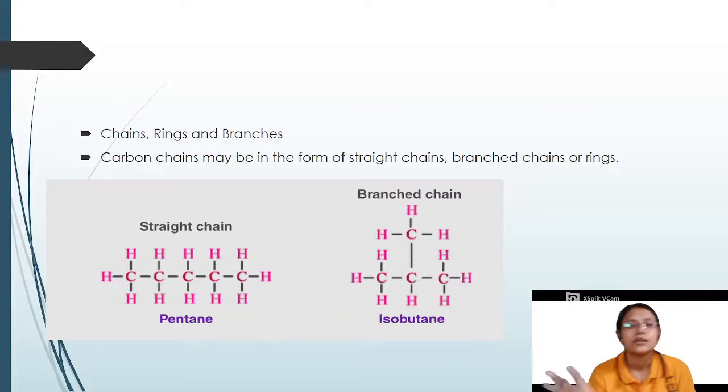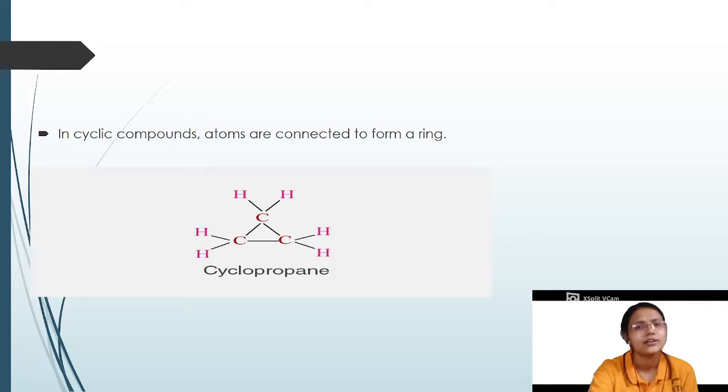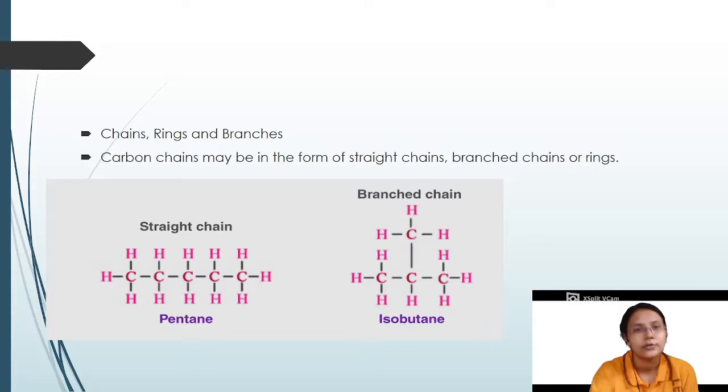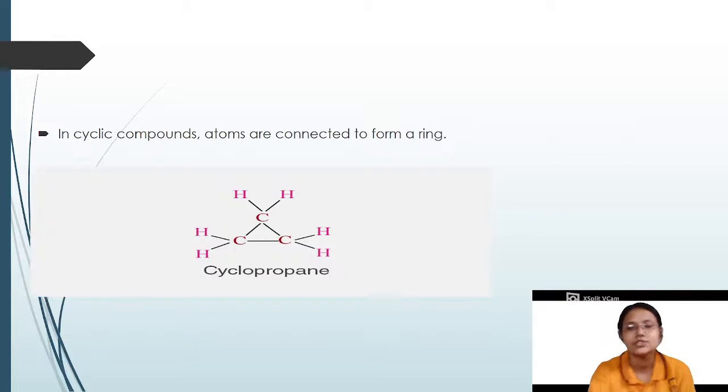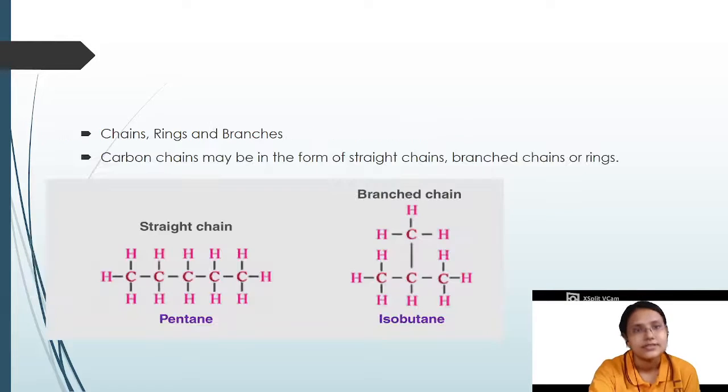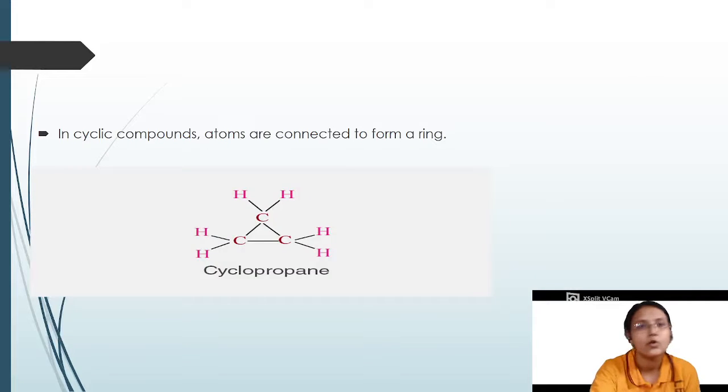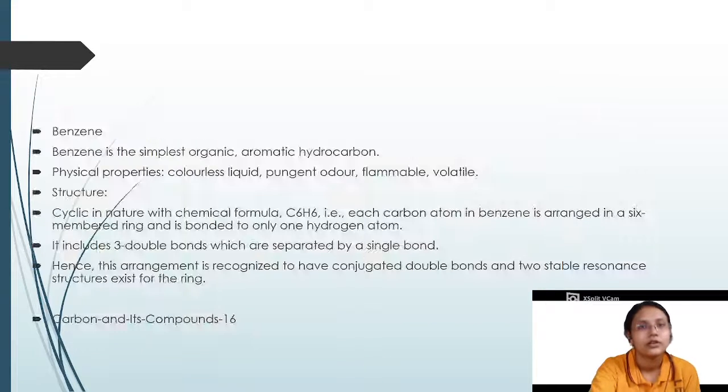Chain and branching: straight chain you can find carbon-carbon single attached. Branch chain you can find in the second picture. In rings you can find a circular chain, a cyclic compound. So first is straight chain, then branch chain, and then you can find circular chain or cyclic compound.